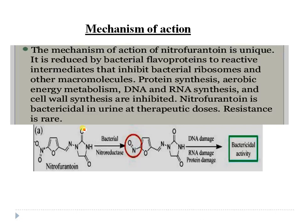The mechanism of action of nitrofurantoin is unique: it is reduced by bacterial flavoproteins to reactive intermediates that inhibit bacterial ribosomes and other macromolecules. This results in inhibition of protein synthesis, aerobic energy metabolism, DNA and RNA synthesis, and cell wall synthesis. Nitrofurantoin is bactericidal in urine at therapeutic doses and resistance is rare.